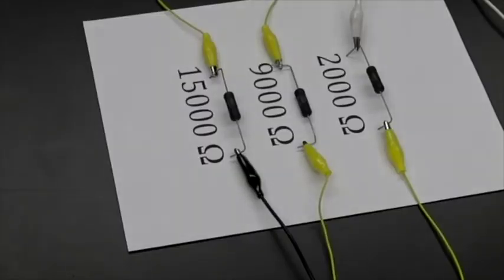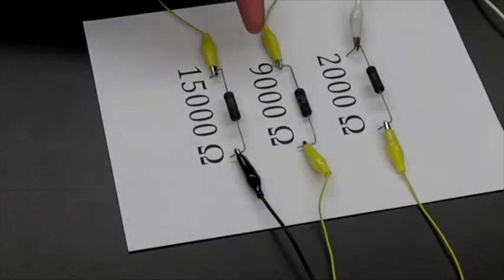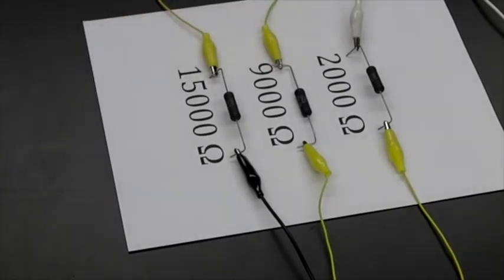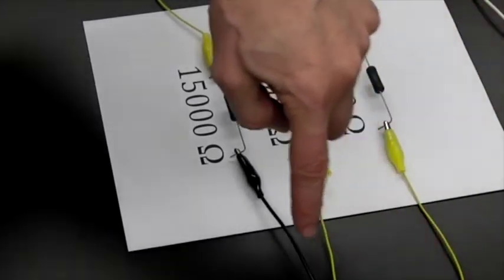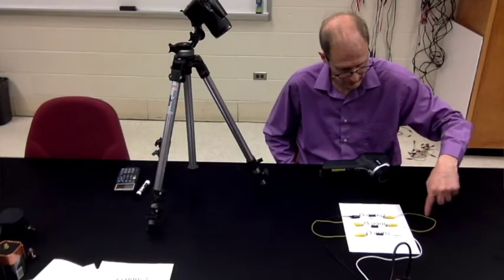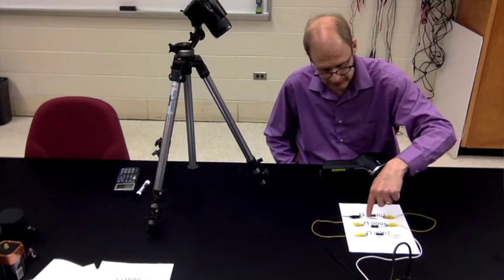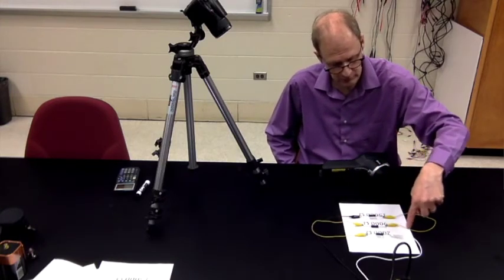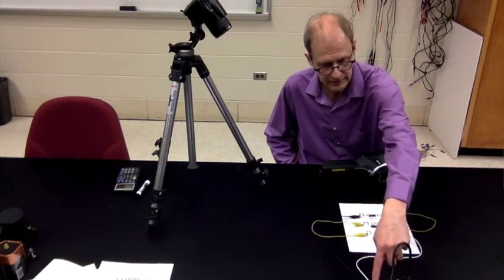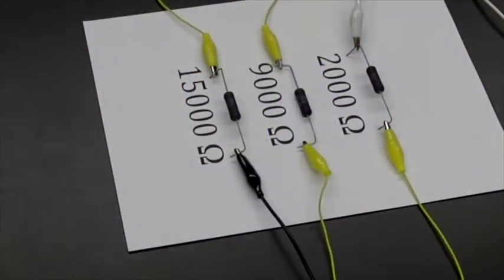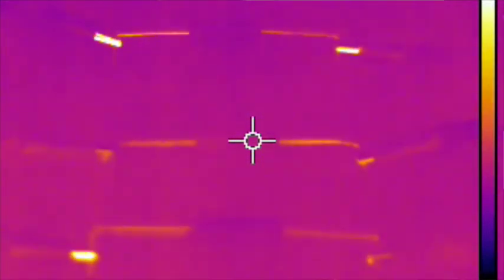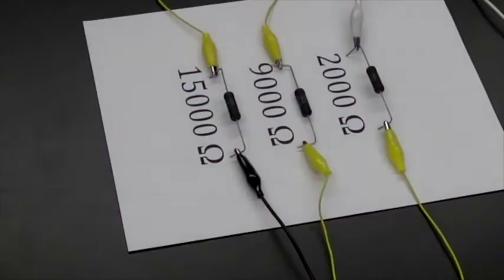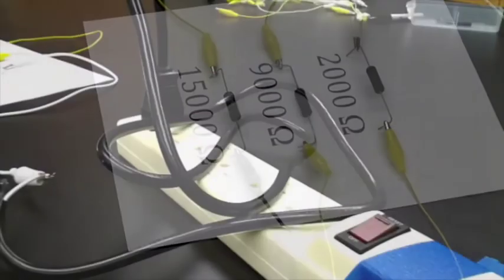Okay, here is our series circuit: 2,000, 9,000, 15,000 ohms in series. Here's the hot wire from the 120 volts through the 15-kilohm resistor, zig through the 9-kilohm resistor, zag through the 2-kilohm resistor, and to the neutral back to the 120 volts. Enough time has passed since I built it so that the three resistors have equilibrated to ambient temperature, and then I'm going to turn on the power.